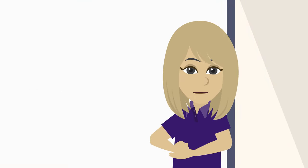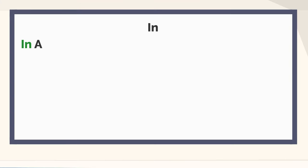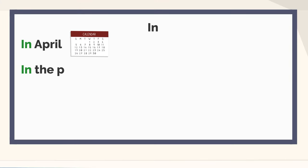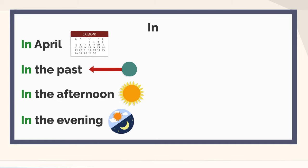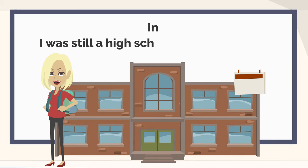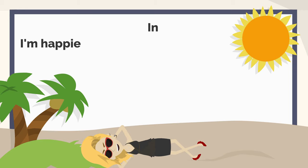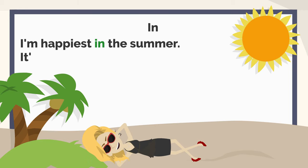Let's look at some more examples with 'in': in April, in the past, in the afternoon, in the evening. I was still a high school student in 1992. I'm happiest in the summer — it's my favorite season of the year.